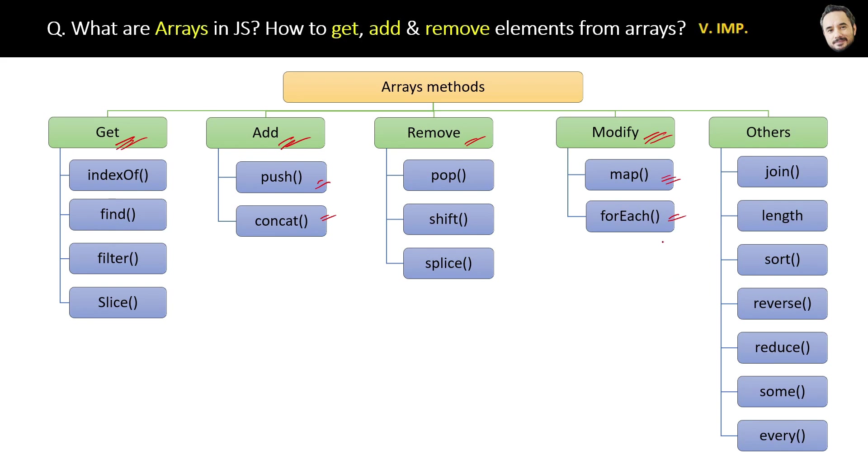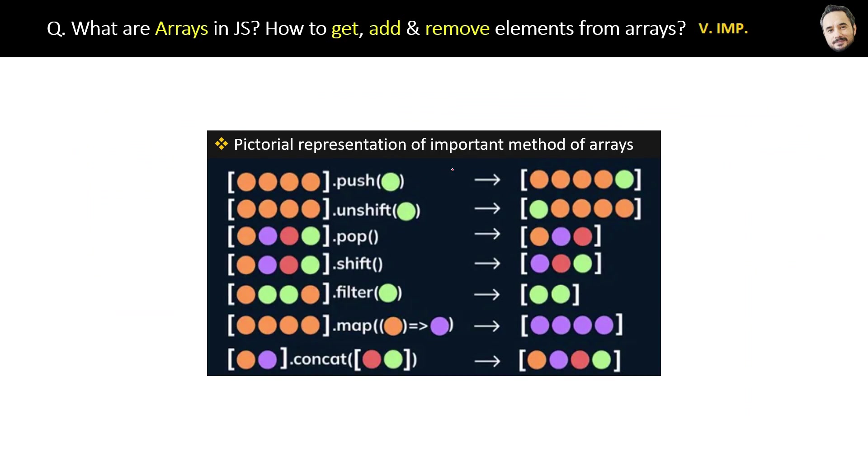I will discuss all these methods one by one in upcoming questions, but here is a quick summary of some important methods. The push method is used to add given elements at the end of the array. The unshift method is used to add the given element at the start of the array. The pop method is used to remove the last element of the array. The shift method is used to remove the first element of the array.